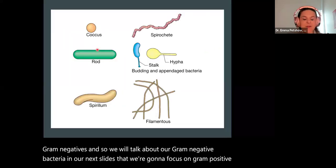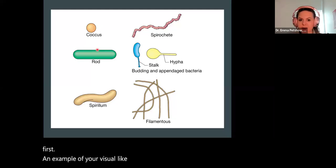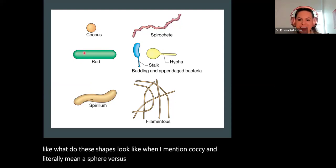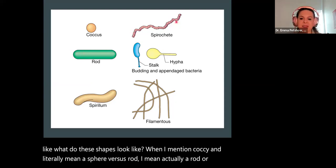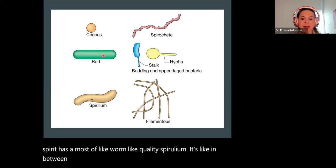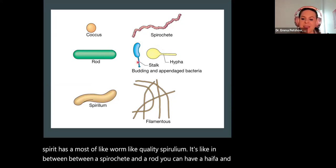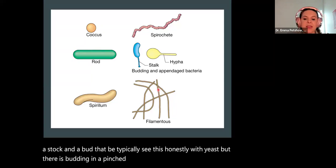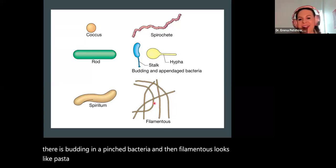If you're visual and need to see images of what these shapes look like — when I mention cocci, I literally mean a sphere versus a rod, which is actually a rod or bacilli. Spirochete has almost a worm-like quality. Spirillum is in between a spirochete and a rod. You can also have a hypha, stalk, and bud — we typically see this with yeast, but there is budding in bacteria. Filamentous looks like pasta, spaghetti, or hair.